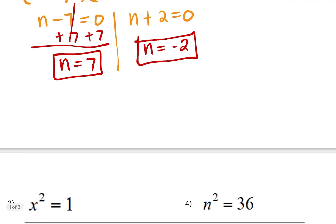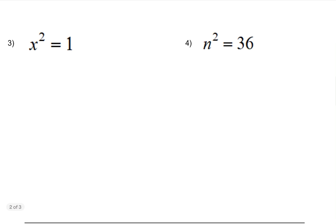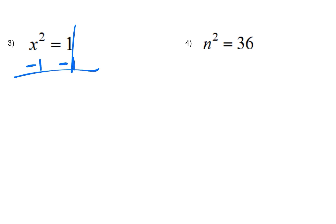Let us try another problem. I will show one way to solve number 3 and then a different way to solve number 4. I will apply what I did in problems 1 and 2 by equating the equation to 0, so I'll do minus 1 on both sides. That gives x squared minus 1 equals 0. Double check — are these perfect square numbers?